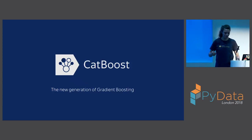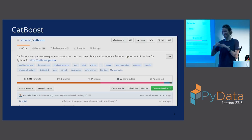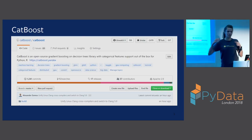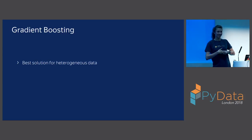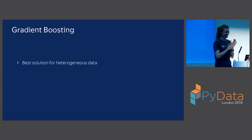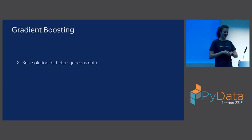CatBoost is gradient boosting. We open sourced this library last July, so it's more than half a year in open source already. We have already more than 2,500 stars, which makes me really proud. We have thousands of users that are monthly downloading the library. Who of you knows XGBoost? Who of you knows CatBoost? Most of you don't know CatBoost, so you are my target audience and this talk will be interesting for you.